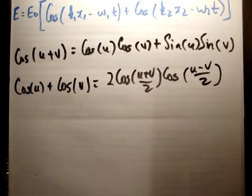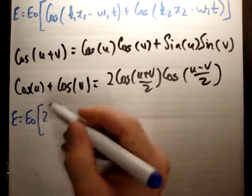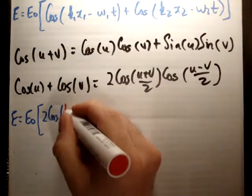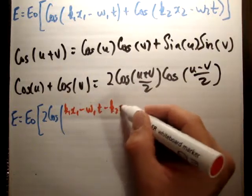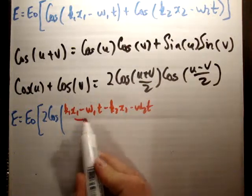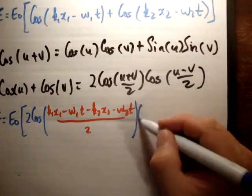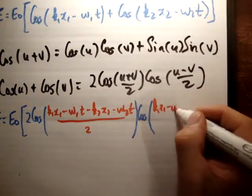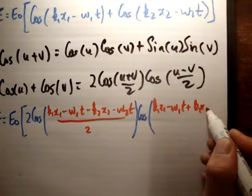So let's apply this bottom expression in black here to our expression in blue, and we're going to get the following, that the electric field is equal to the initial electric field amplitude times 2 times the cos of, now we need to be careful here, so I'm going to do it in a different colour, k1 x1 minus omega 1t minus k2 x2 minus omega 2t divided by 2.